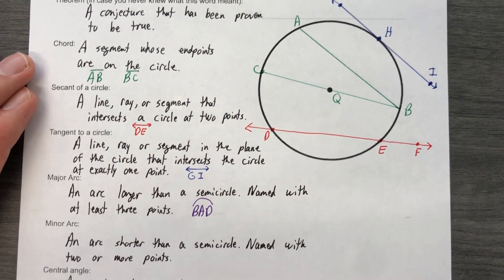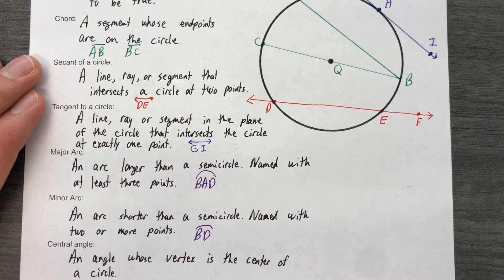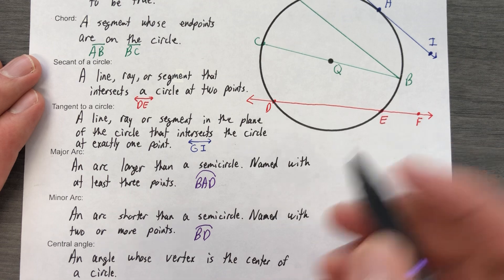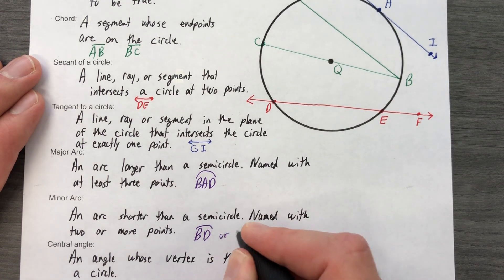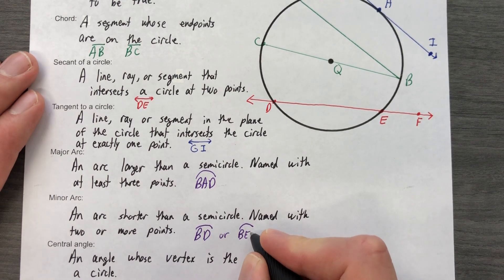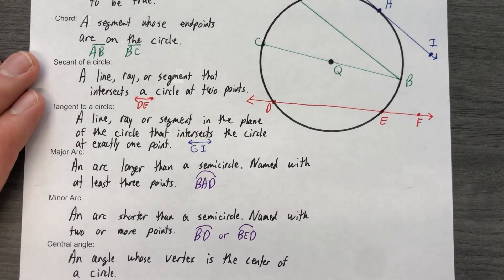So a minor arc would be BD. Okay? Also I could say BED—B-E-D is still the same as BD. So I can use three letters if I like, but it's only going to be less than half a circle.